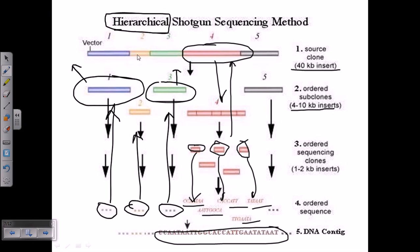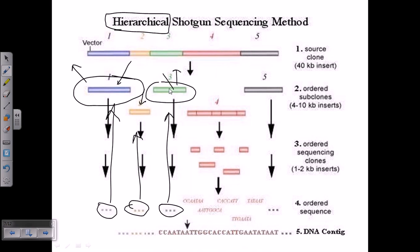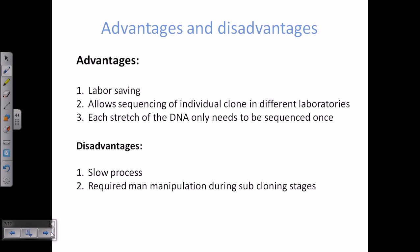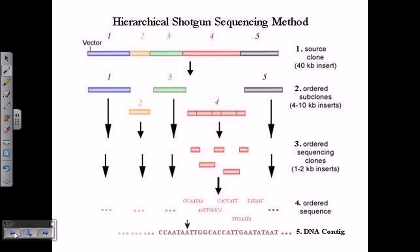Before sequencing is done, we must know the map of this chromosome because we use markers. For example, we know this is purple, blue, yellow, green, and red. We know all of these segments even before we start the sequencing. Another advantage is that each stretch of DNA only needs to be sequenced once. As fragments of the DNA, if one is sequenced, we get the rest of the sequences.